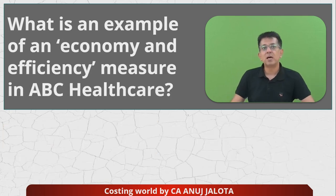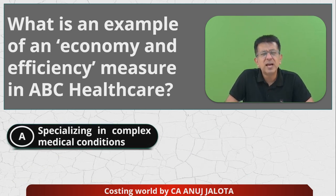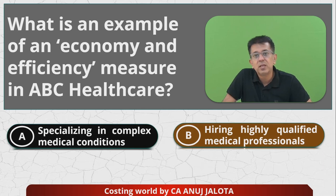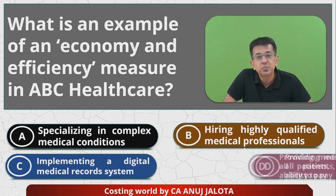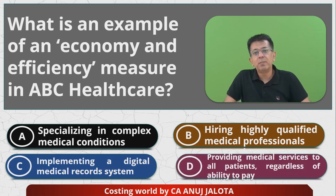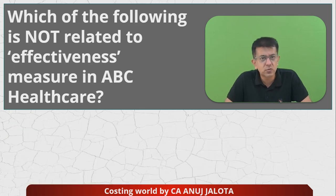Part B: What is an example of an economy and efficiency measure in ABC Healthcare? Option A — specializing in complex medical conditions — comes under effectiveness. Option B — hiring highly qualified medical professionals — also effectiveness. Option C — implementing a digital medical record system — this was economy and efficiency. Option D — providing medical services regardless of ability to pay — also effectiveness. So the answer is C — that is the correct answer.